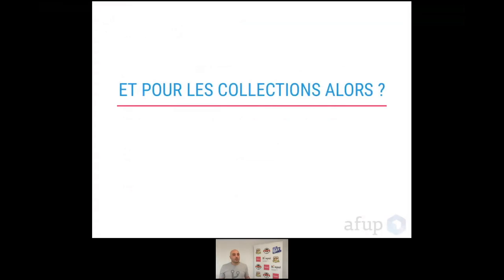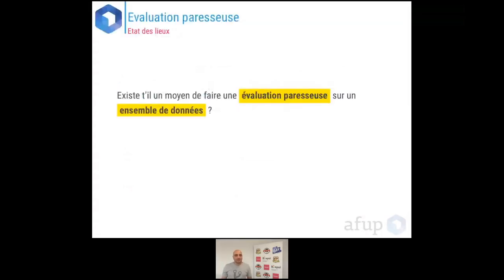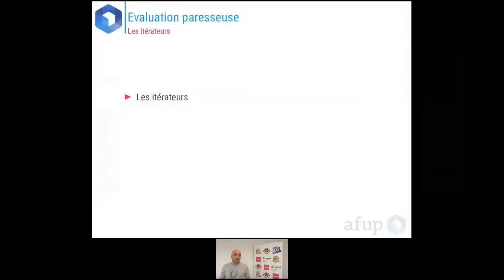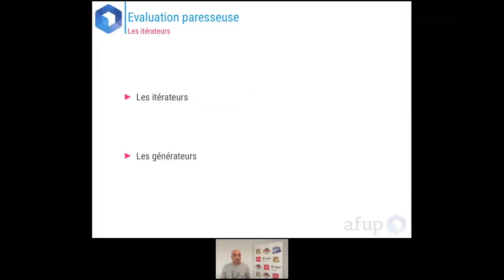Pour les collections, existe-t-il un moyen de faire une évaluation paresseuse sur un ensemble de données ? Une sorte de thunk qui pourrait itérer sur les éléments d'une collection et renvoyer ces éléments un par un sans jamais évaluer le résultat dans sa globalité. Vous l'avez deviné : ça existe, et ça s'appelle les itérateurs, et parmi eux, les générateurs.